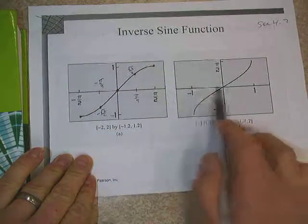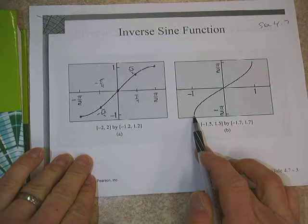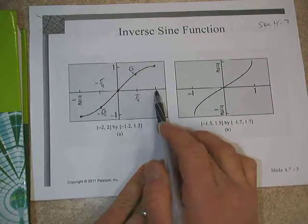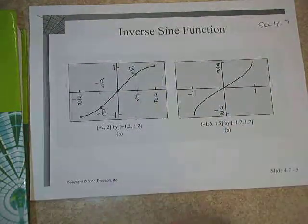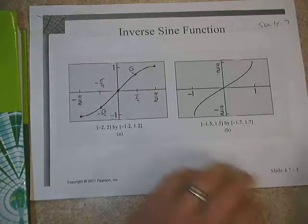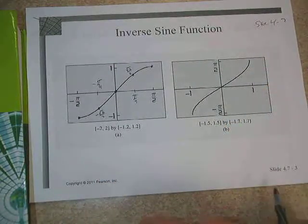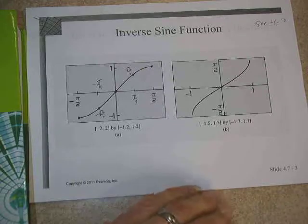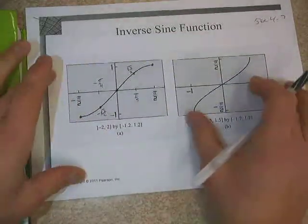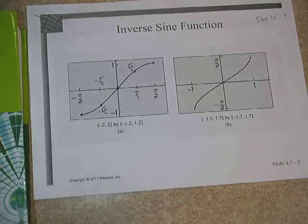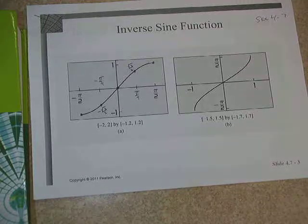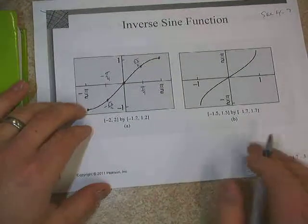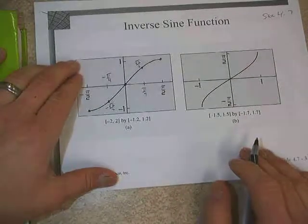As it turns out, the inverse sine looks like this. Plotting the reversed points: negative 1 maps to negative pi over 2, 1 maps to pi over 2, and 0 maps to 0. If we plot enough points in between, we get this general shape. You notice it doesn't look too dissimilar from the original, and if we put them on top of each other, we see they are reflections over the line y equals x — just like all inverses are.